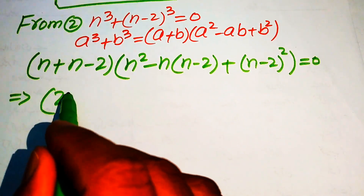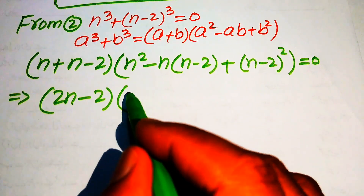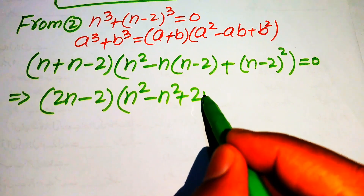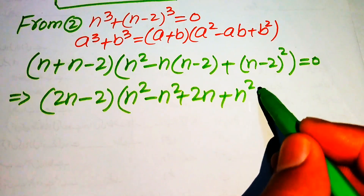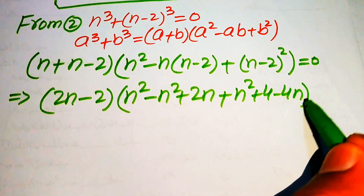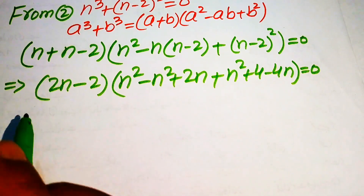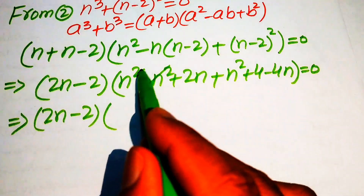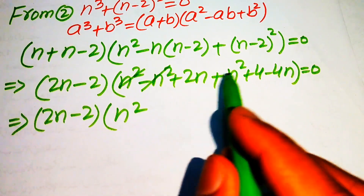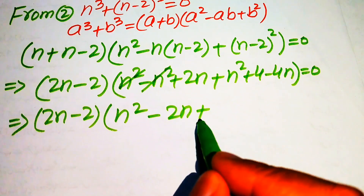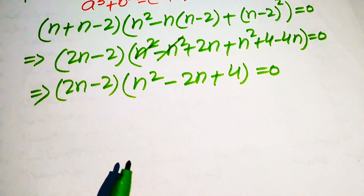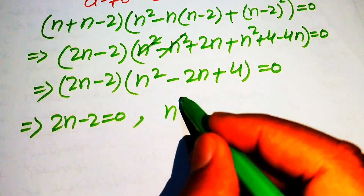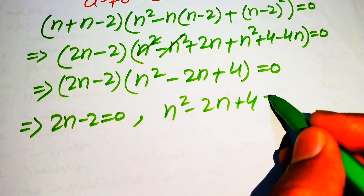Adding the first two terms gives 2n minus 2. For the bracket, we multiply minus n by both terms to get minus n squared plus 2n, and we open n minus 2 squared to get n squared plus 4 minus 4n, all equals to 0. After simplification, the positive and negative n squared terms cancel, leaving 2n minus 2 times n squared minus 2n plus 4 equals to 0.